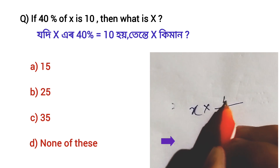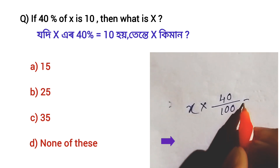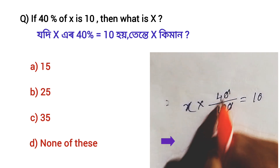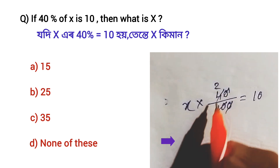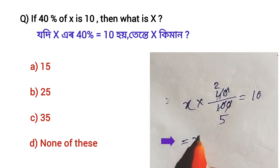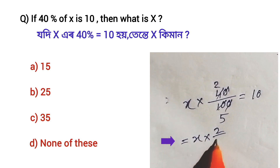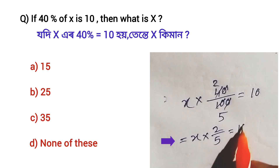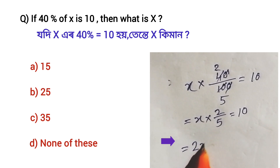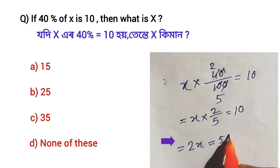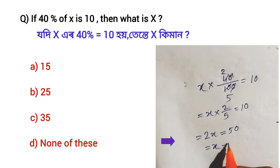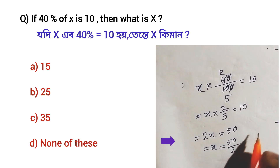Let's solve it. X into 40 divided by 100 is equal to 10. Simplifying, X into 2 by 5 is equal to 10. So 2X is equal to 5 into 10, which is 50. Therefore X is equal to 50 divided by 2. Simple tricks — X equals 25.